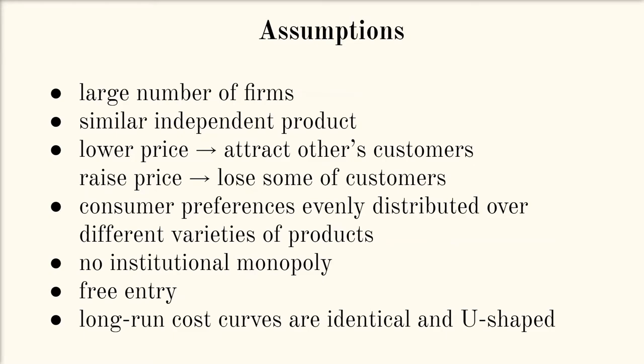The assumptions of Chamberlin's excess capacity are: the number of firms is large and each produces a similar but differentiated product independently; a firm can attract customers by lowering price or lose them by raising it; consumer preferences are fairly and evenly distributed among product varieties; no firm has institutional monopoly over any product; firms are free to enter; and all firms have identical U-shaped long run cost curves.